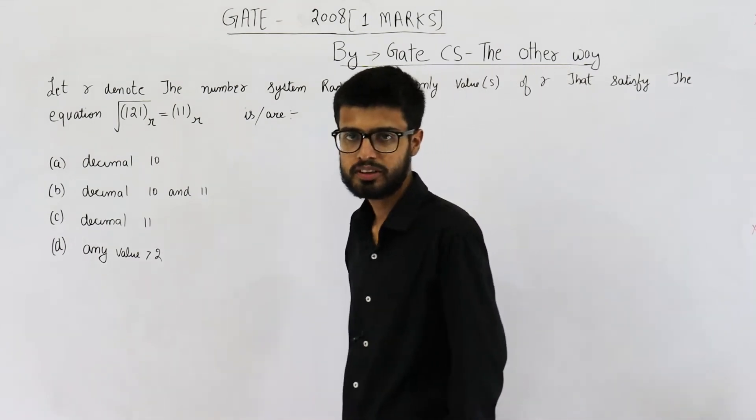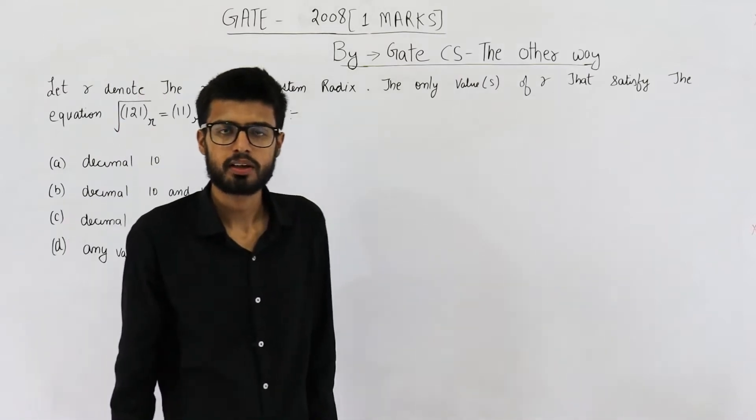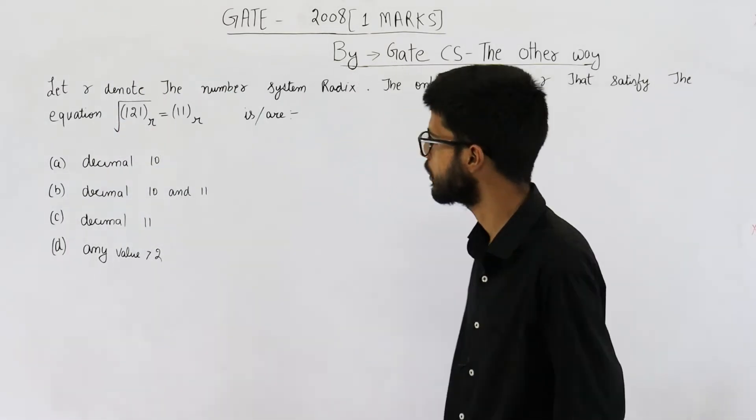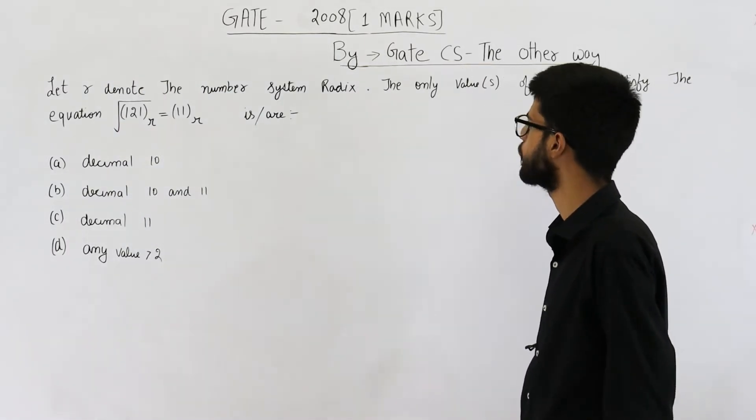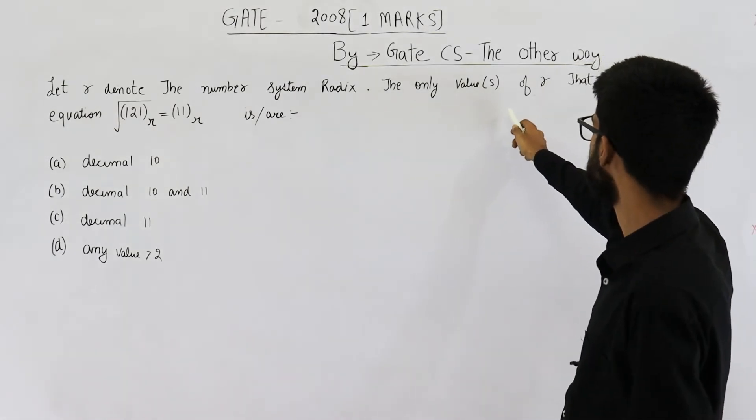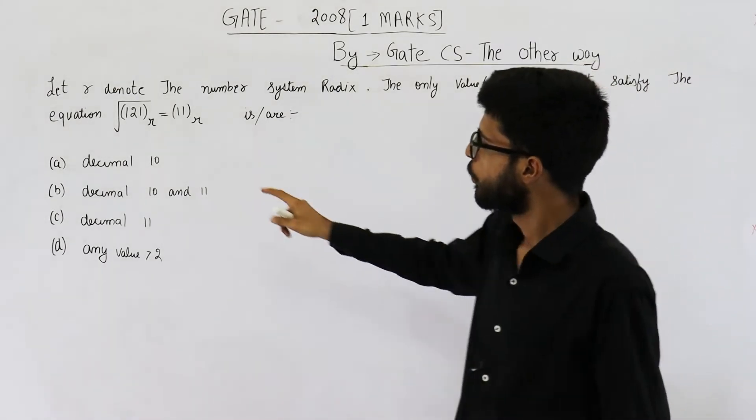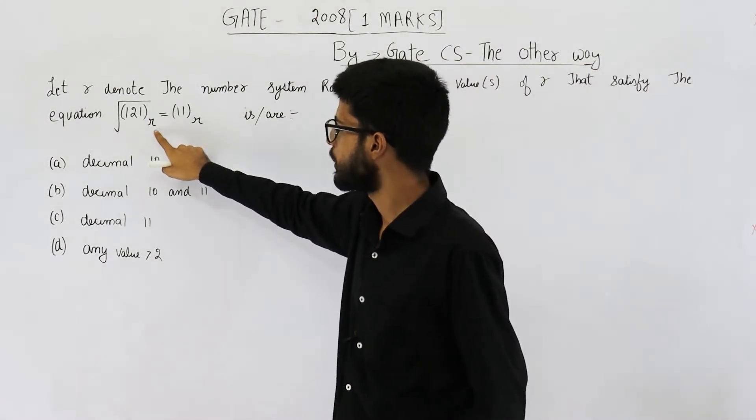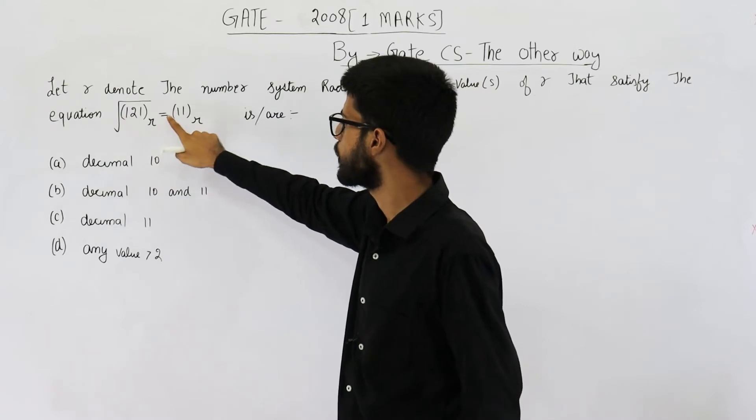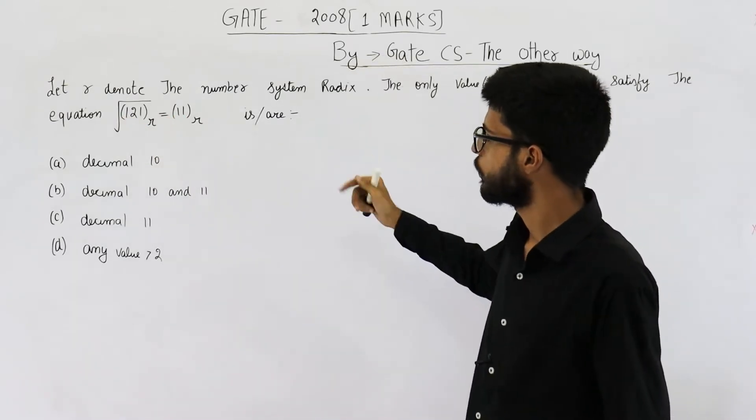Hello people, welcome back. This question is also from GATE 2008 exam but it's for one mark. Let r denote the number system radix. The only value or values of r that satisfy the equation: square root of 121 in base r equals 11 in base r. So we need to determine what is the radix for this equation.